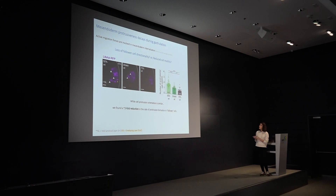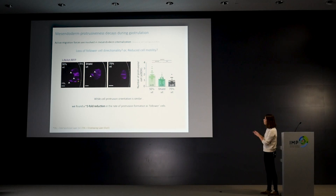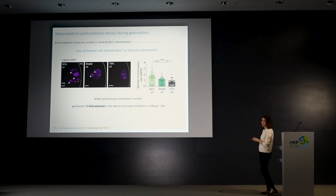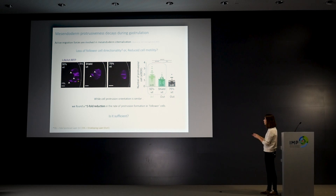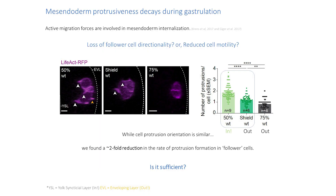Looking at the second hypothesis: when we counted the number of protrusions formed by these cells over time, we see a decline — early cells form the greatest number of protrusions and this decreases over time. Focusing at the transition point where cells lose the ability to internalize, we see a difference in protrusion number of around twofold.